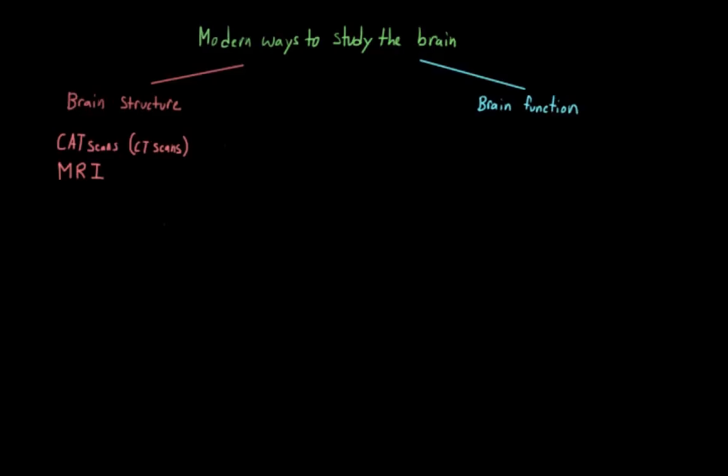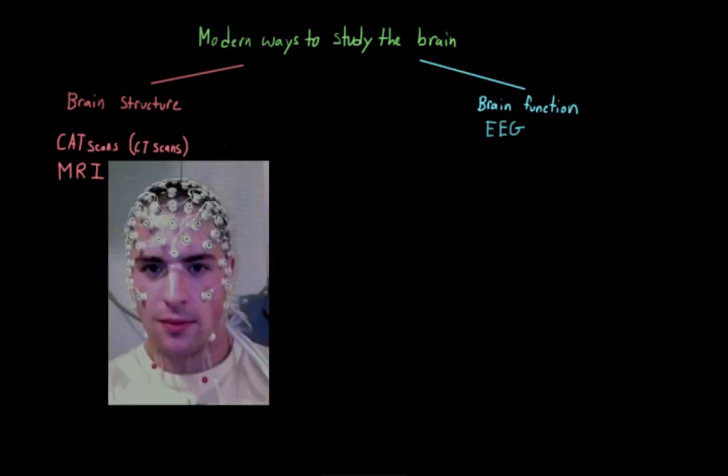For example, researchers can use electroencephalography, or EEG, in order to measure the electrical activity that is generated by neurons in the brain. This is done by placing electrodes on someone's scalp at predetermined positions, usually by using a cap with electrodes that are filled with a conductive gel. Unlike single cell recordings, these electrodes are not invasive. They don't have needles or anything. They're just placed right on the scalp.